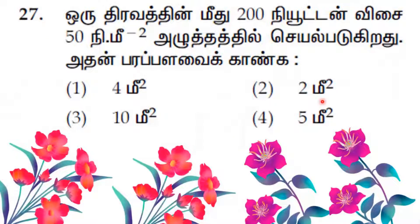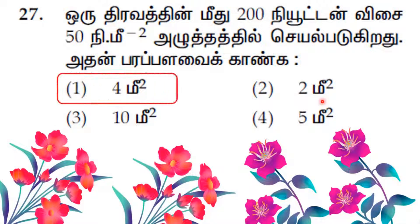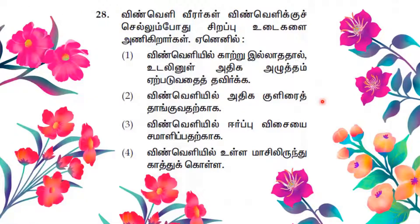Question number 27: 1.20 Newton Vissai 50.00 per meter square. Question number 28: 1.20 Newton Vissai 50.00 per meter square.